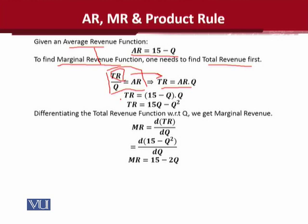The total revenue value is used for value substitution. If I substitute AR from here, I will get this term, and Q retains its place. Simple multiplication gives us the total revenue function. Our goal is that we can calculate the marginal revenue.